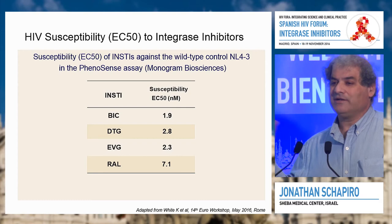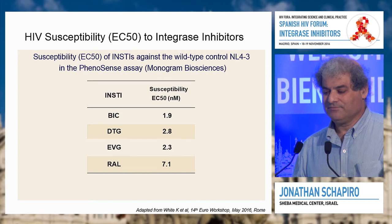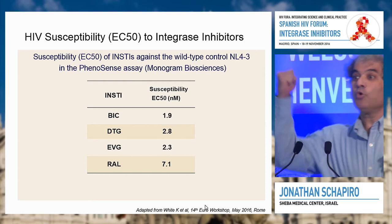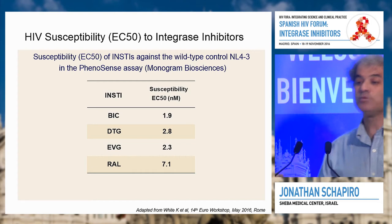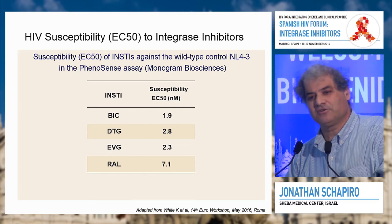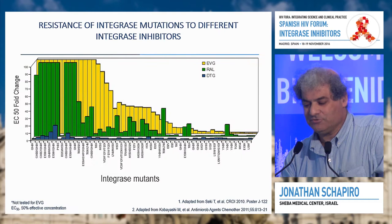Looking at wild-type potency only — nothing to do with resistance — bictegravir and dolutegravir are all the same. So second-generation drugs are not more potent. Raltegravir is super potent too; there's no difference there. We didn't get drugs with more potency — we have drugs where their pharmacology and resistance characteristics are different. Potency is not where the improvement is.